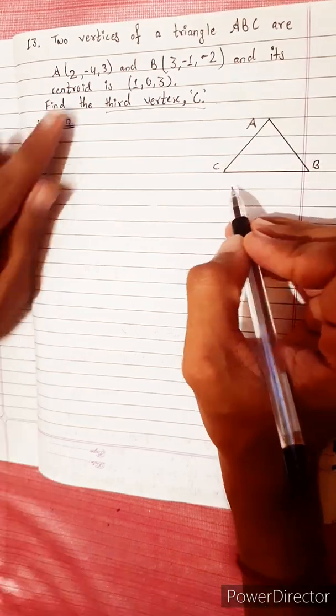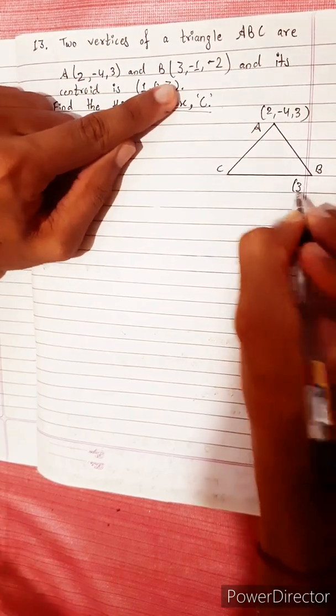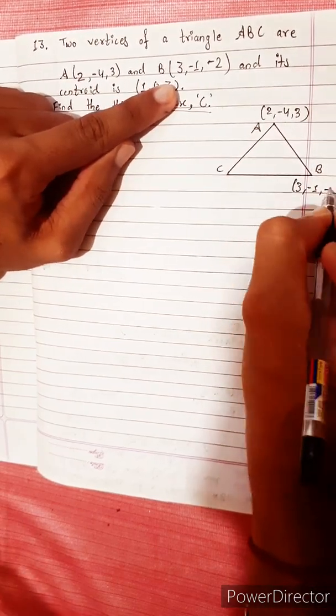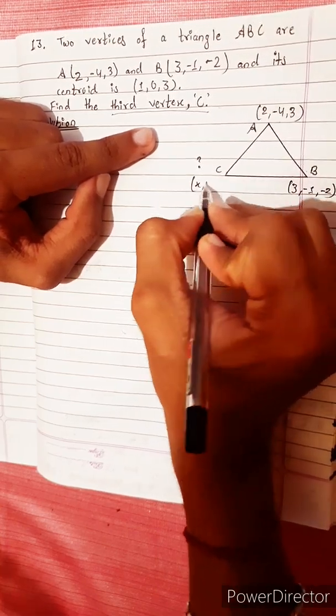We have triangle ABC. This point A is (2, -4, 3), and B is (3, -1, -2). Find the third vertex C, which we'll call (x, y, z).